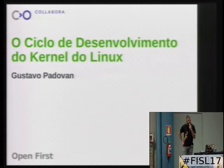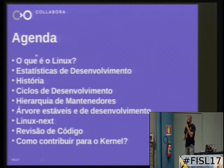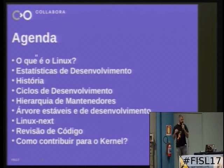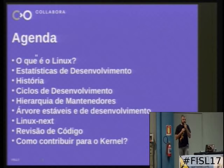I'm going to talk a little bit today about the development cycle of the Linux kernel — how we develop, how we do releases, how we work day-to-day in a large project that demands so much effort and is sometimes very complicated to manage. I'll start with Linux statistics, then the history, the development cycle, the trees, how we develop, where stable is, Linux Next, how we review code, and at the end I'll try to show how to contribute patches to the Linux kernel.